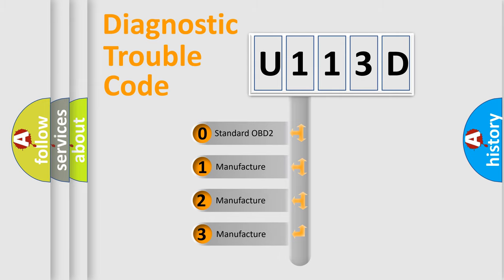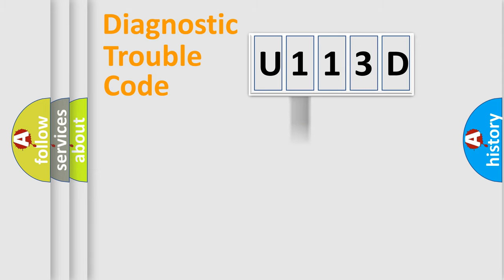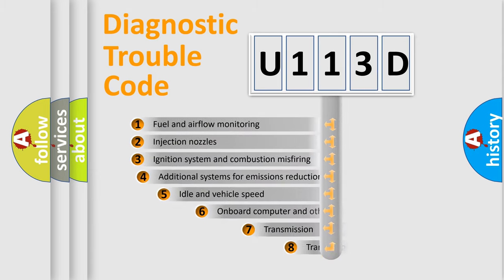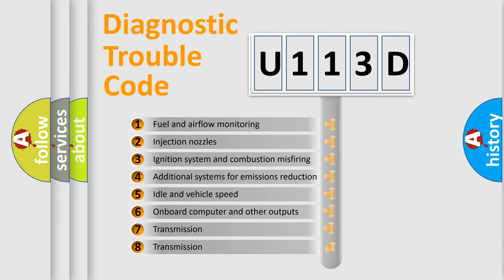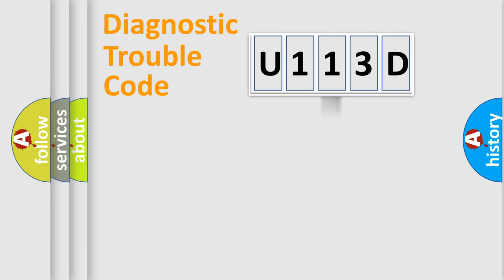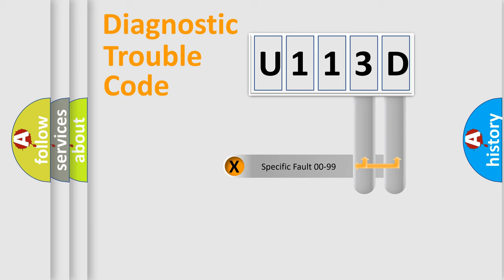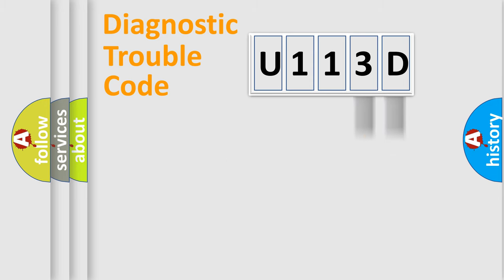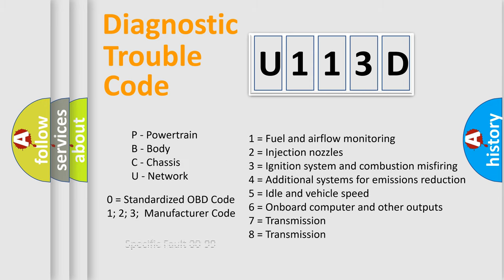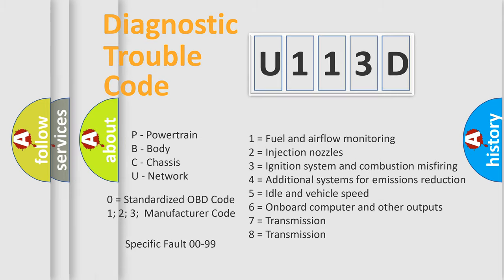If the second character is expressed as zero, it is a standardized error. In the case of numbers 1, 2, or 3, it is a more specific expression of a car-specific error. The third character specifies a subset of errors. This distribution is valid only for the standardized DTC code. Only the last two characters define the specific fault of the group, and such a division is valid only if the second character code is expressed by the number zero.